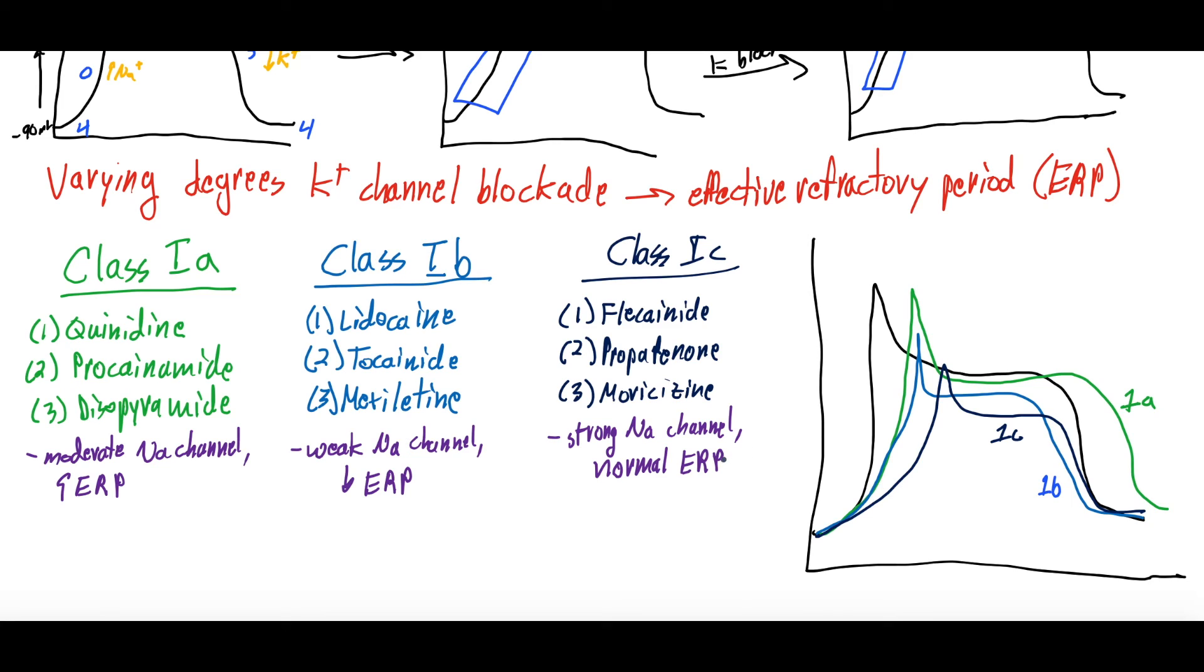So summary is that sodium channel blockers, there's multiple different subclasses that all have different kind of strength of sodium channel blockade and also have different effects on the refractory period. These are good for tachydysrhythmias. They decrease the slope of phase 0 because they're blocking that sodium channel in phase 0, and they also, many of them, affect the refractory period, either prolonging it, shortening it, or not changing it.